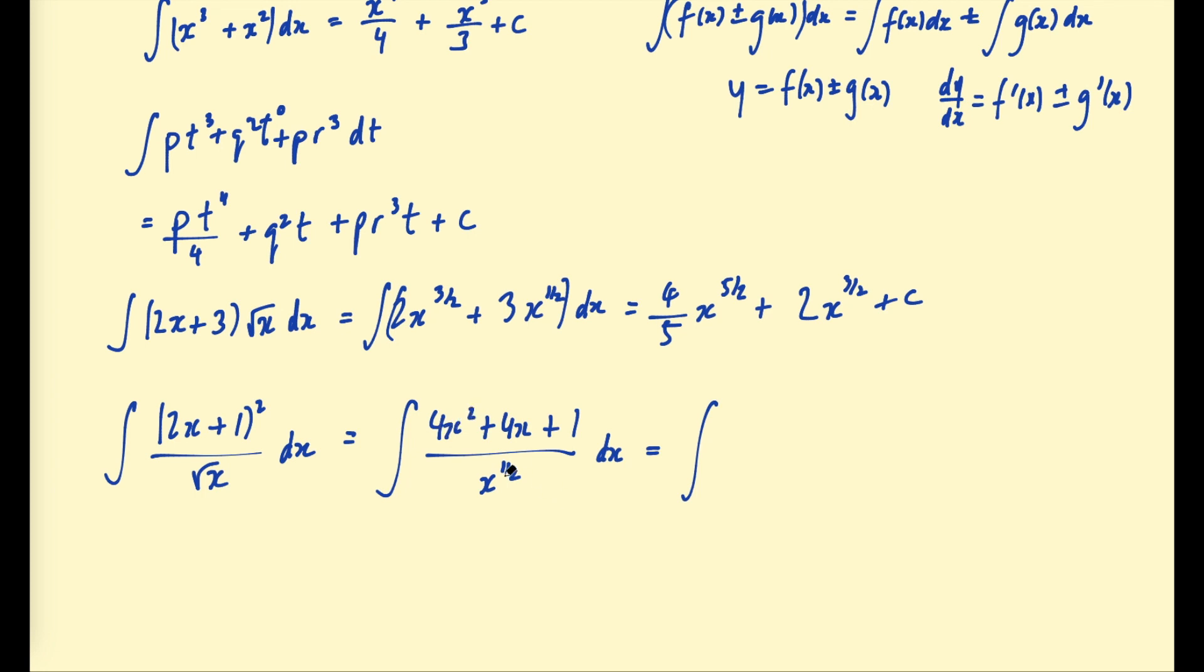And then we want to divide each term by x to the half. So 4x squared divided by x to the half, subtract the exponents, so we get 4x to the 3/2. 4x divided by x to the half is 4x to the half. And then 1 over x to the half, I'm going to write as x to the power of negative 1/2.